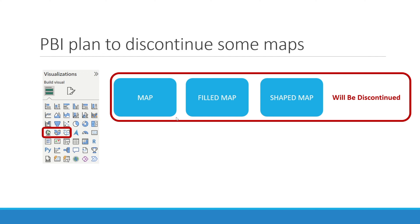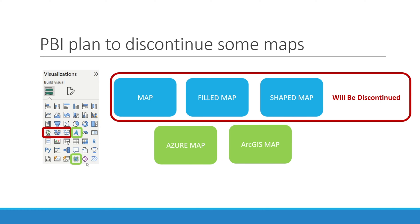These three maps — map, field map, and shape map — will all be discontinued. The replacement has been announced, and that is the Azure map. It will stay. And the other map, which is ArcGIS map, will also be staying. It won't be discontinued in the near future.